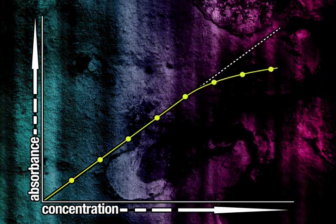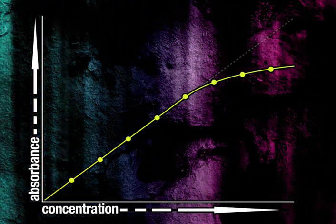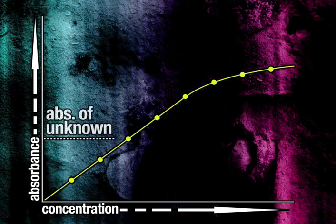If we want to work out the concentration of a known compound, we would use standards to produce a calibration curve, and then work out the concentration by using the graph and the known absorbance.